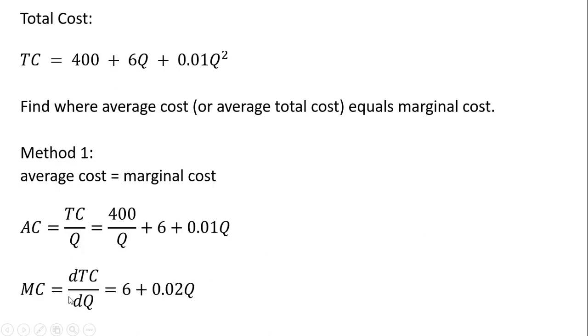Next thing is to get marginal cost. If marginal cost is not given to you, you can get it by taking the derivative of the total cost equation. So the derivative of 400 or a constant is 0. The derivative of 6q is just 6. And the derivative of this last term here, we're going to take this 2 down in front, so it's going to be 2 times 0.01. That's where this 0.02 is coming from. So 2 times what's out in front. And then on the exponent, we're going to subtract 1. So 2 minus 1 here in the exponent just leaves us with q.